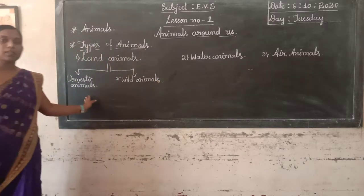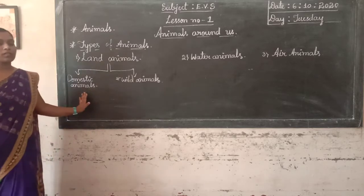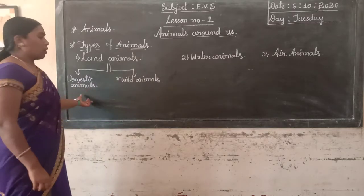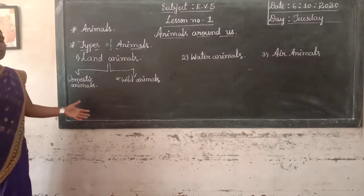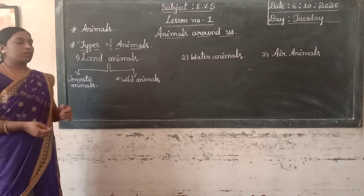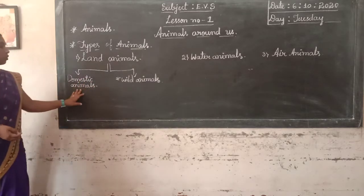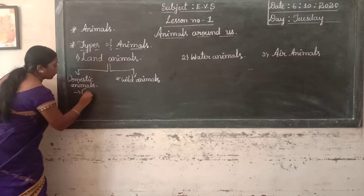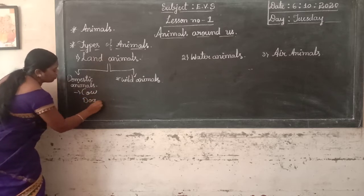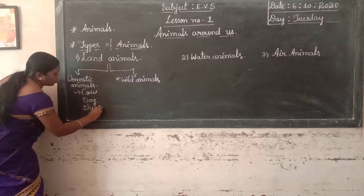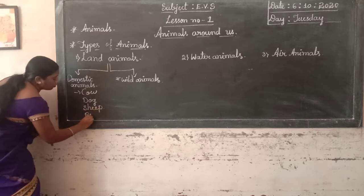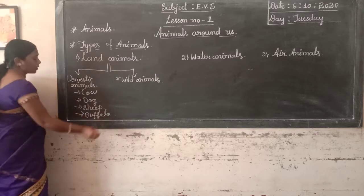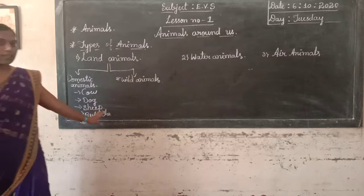Domestic animals — so what are domestic animals? Animals that depend on humans for their shelter, food and water are called domestic animals. Domestic animals depend on humans for food and shelter. Examples of domestic animals are cow, dog, sheep, buffalo, etc.